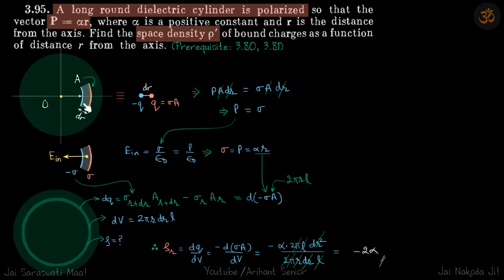Now for the electric field, let's take a point between these two surfaces. The charge density we calculated is σ and -σ. So E inside is σ/ε₀ = P/ε₀, which gives σ = P = αr. So we have found how the surface charge density varies with radius.